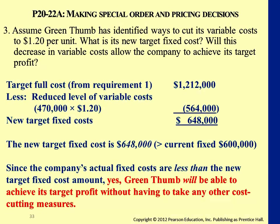To sum up: for price takers versus price setters, it depends on how unique your product is — the pricing strategies are different. If a problem tells you the current market price and that they must accept it, they're more toward the price taker side, meaning they're in a competitive industry. They work backwards: figure out the target price first, minus the desired profit, to set the cost. Price setters with innovative or technology-related products have more control over sales price because their product offers functions competitors don't have.